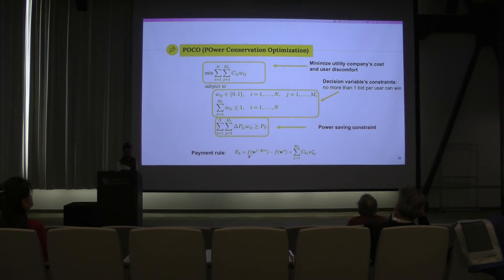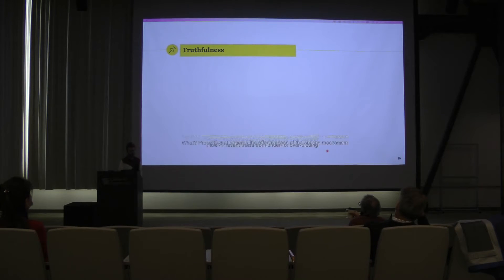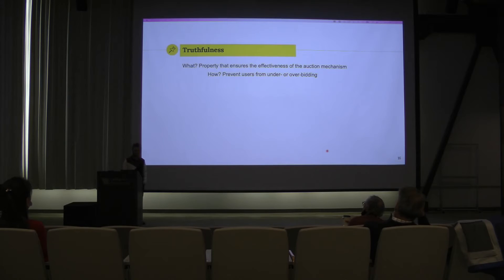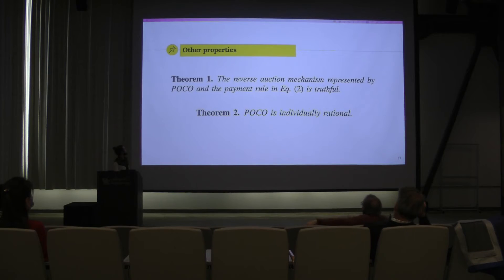We also define a payment rule. The idea is that this is needed to guarantee some properties that reverse auctions need to have. For example, one is the property of truthfulness. The property of truthfulness ensures the effectiveness of the auction. Basically, we want to prevent users from under- or over-bidding in a way that they would manipulate the system. Through the payment rule, we also have the property of individual rationality, which guarantees that the system pays users an amount greater than what they asked for.